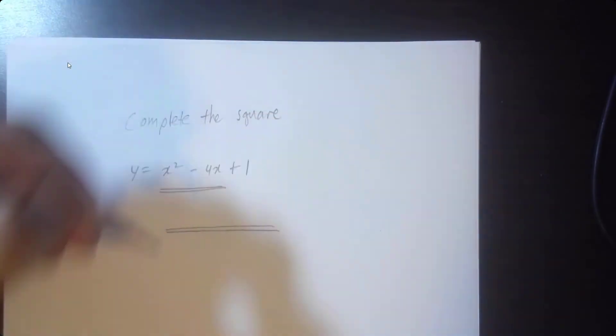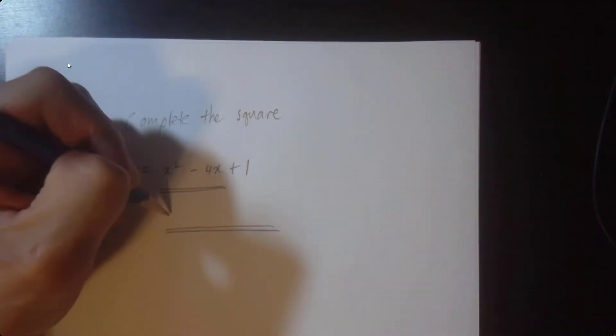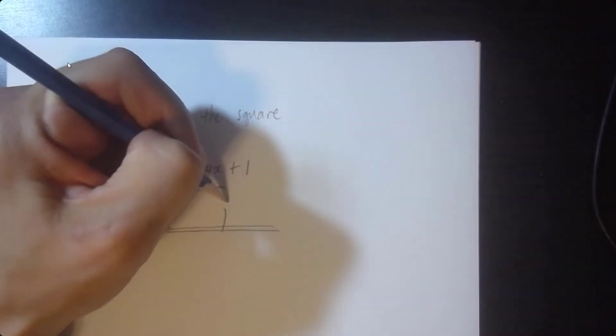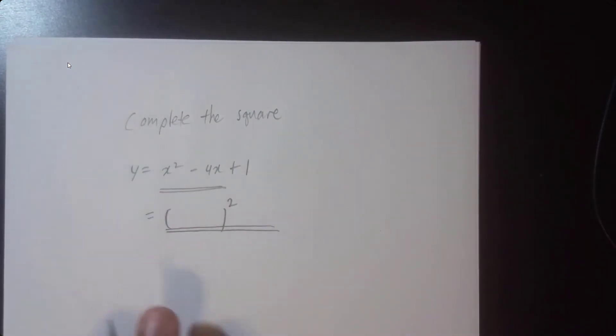We need lots of room to land our airplane. We're going to set up our nice brackets here and it's going to be squared. The whole point of completing the square is to have something squared so we can read off the vertex.